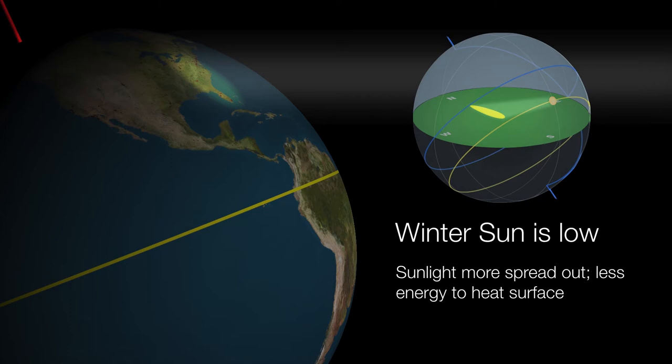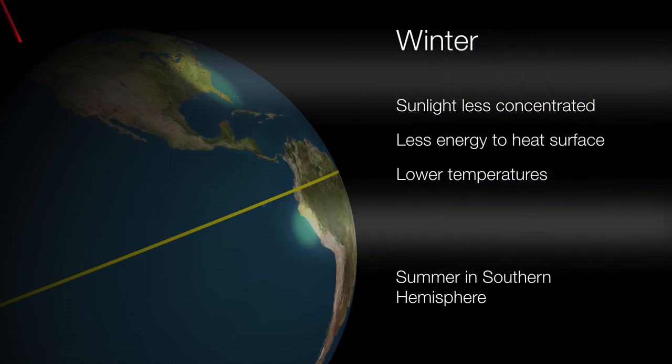Notice that even while we're experiencing winter in the northern hemisphere, the southern hemisphere is now receiving more concentrated sunlight. The southern hemisphere is tilted toward the sun, so our winters are the southern hemisphere's summers.